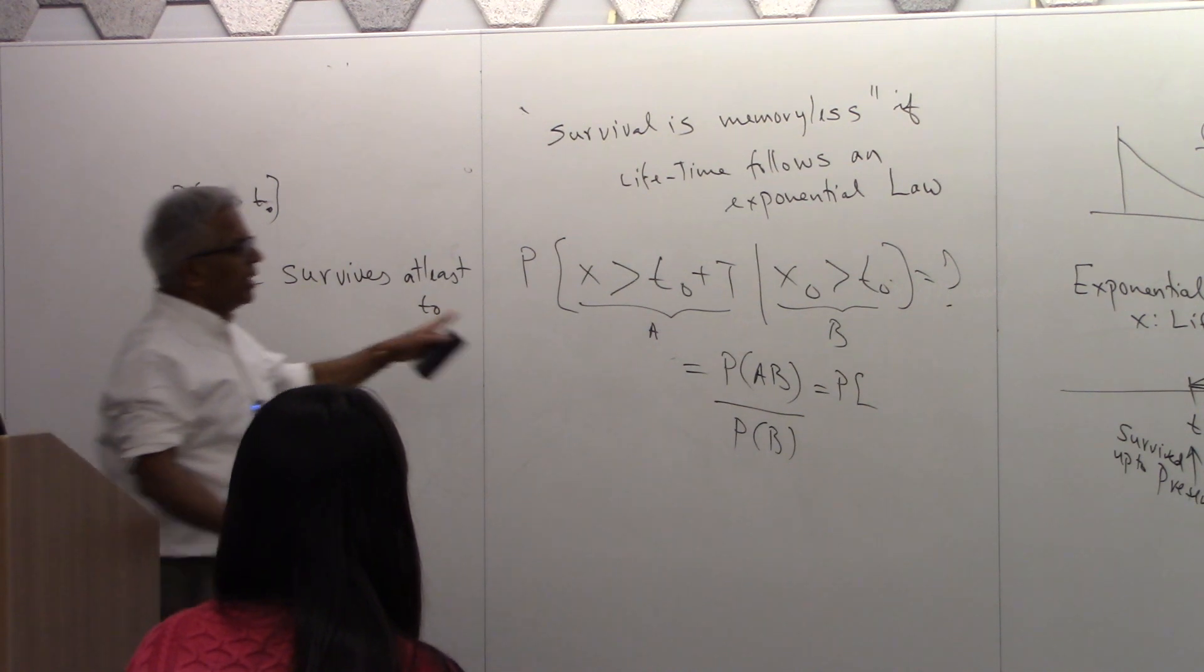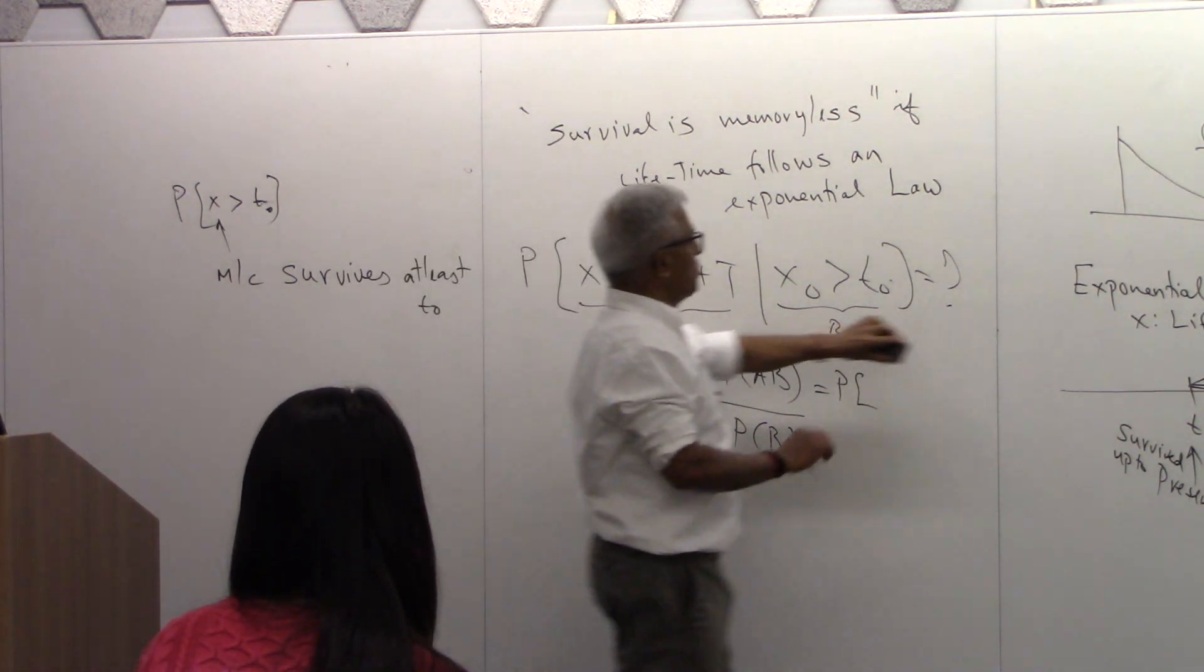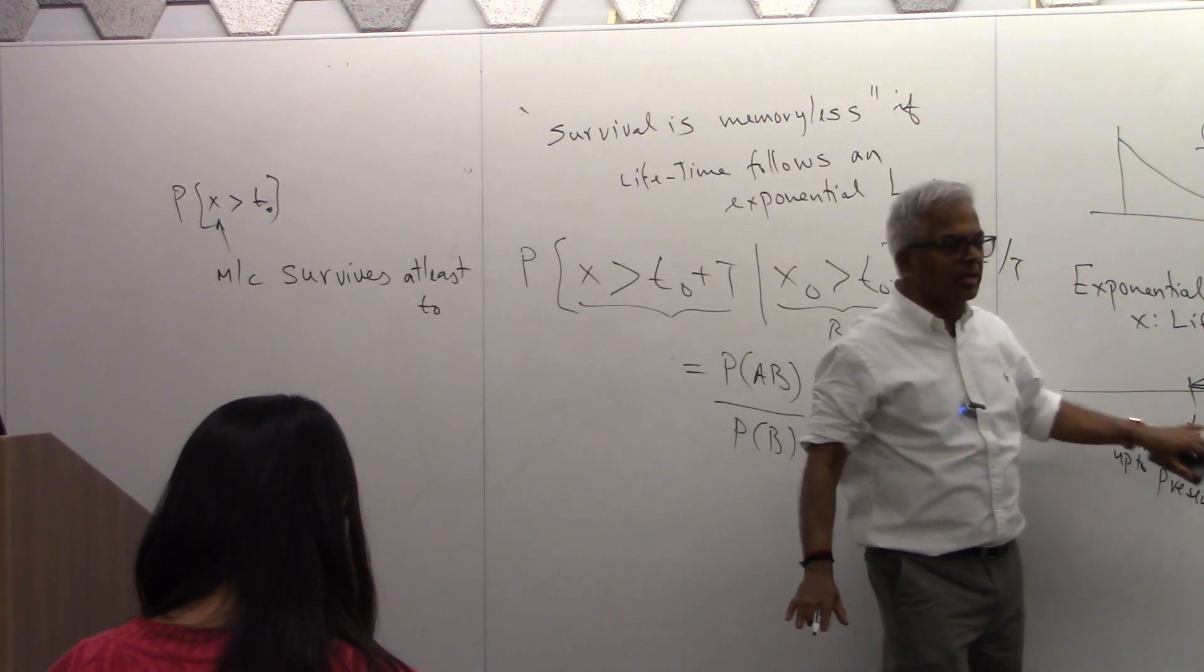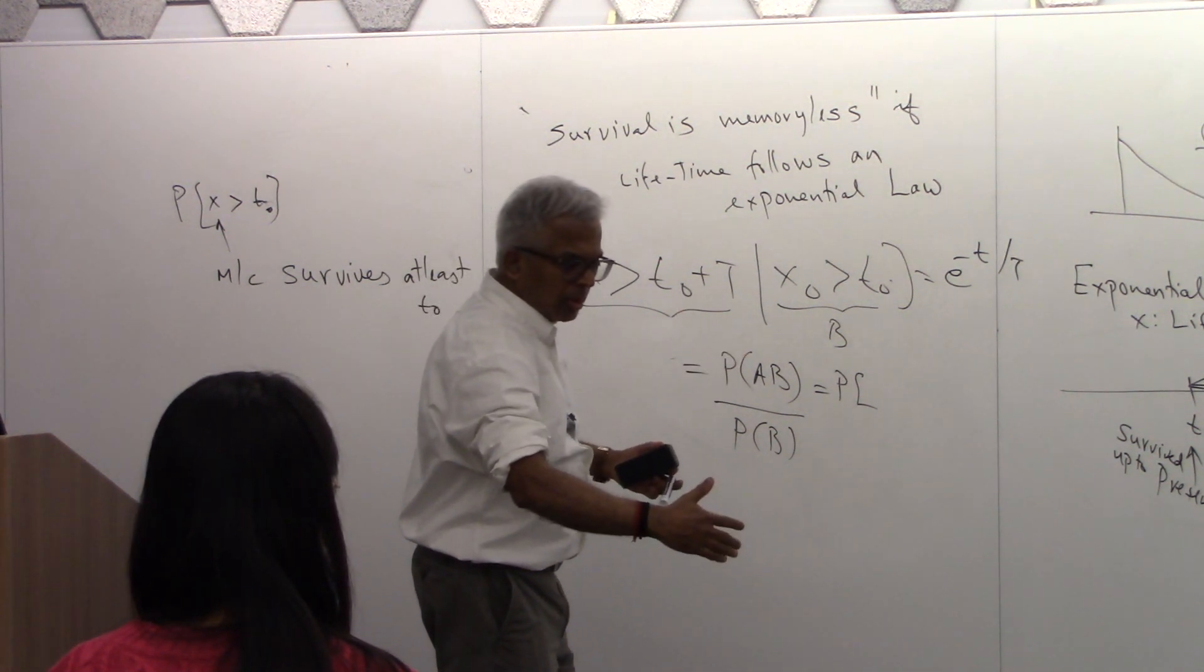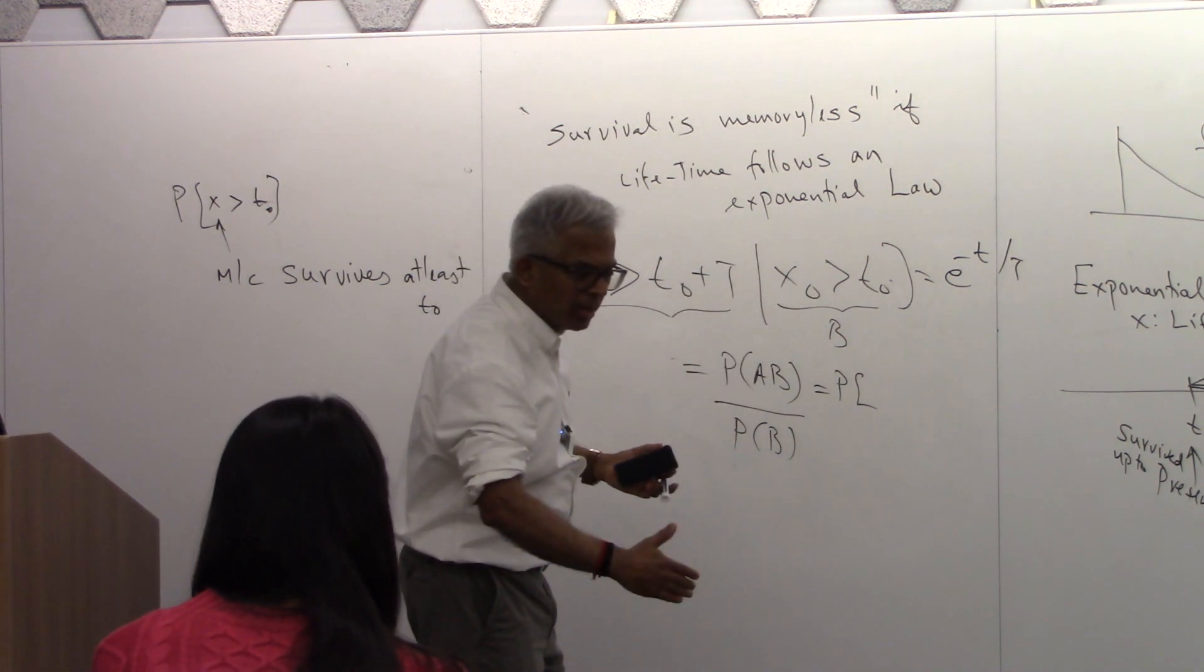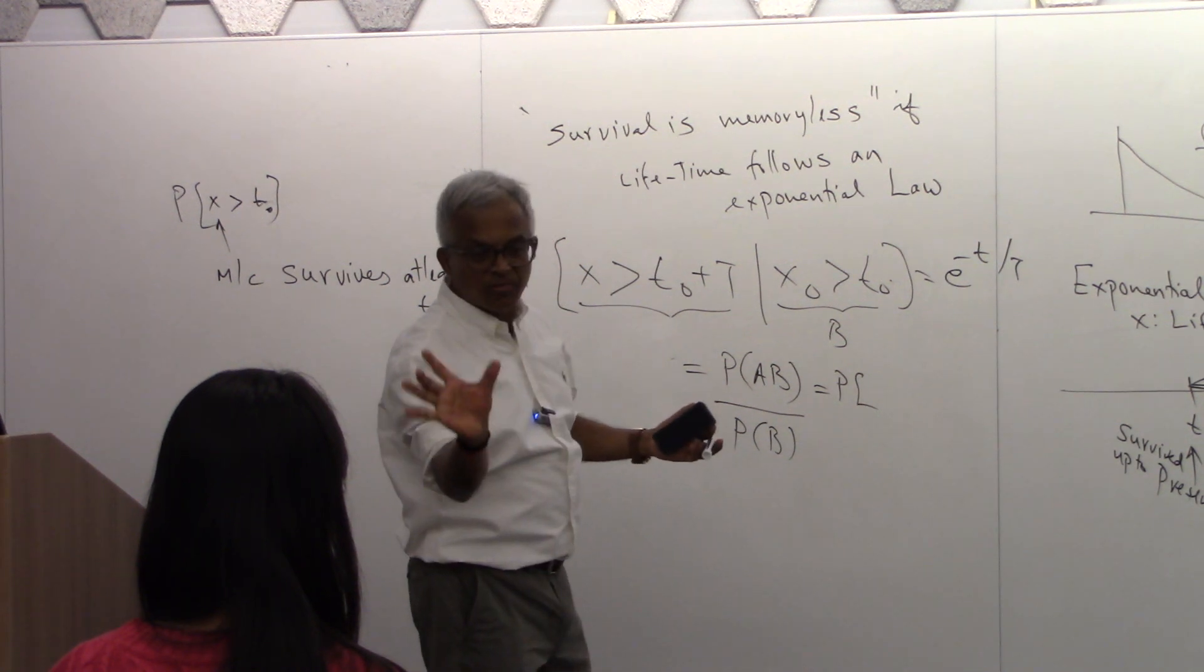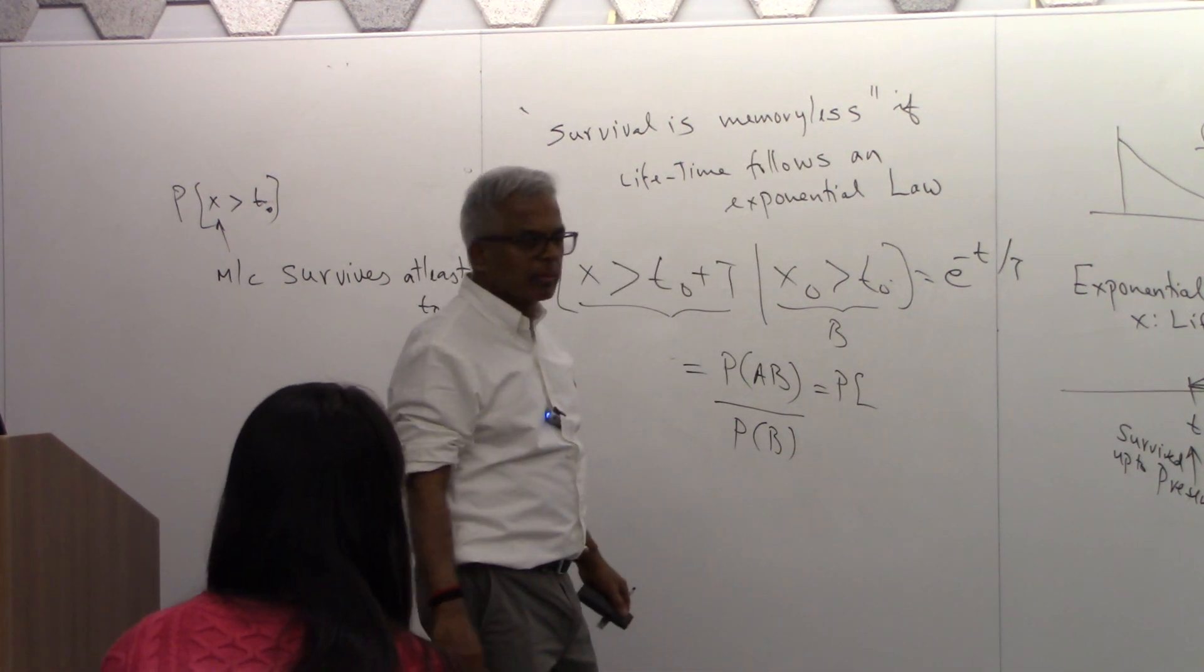The whole idea is that—look at here. This expression has t naught all over. But the answer turned out to be e raised to minus t. There is no t naught here. That means whatever we are computing has nothing to do with t naught. It's free of that. But t naught is the fact that machine has survived up to now. This probability has nothing to do with that. It doesn't matter whether machine survived one year or ten years. The probability that your washing machine will live for another five years only depends on that five years. But if you say that's not true, then that means your assumption is not right.